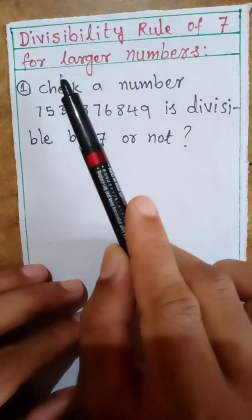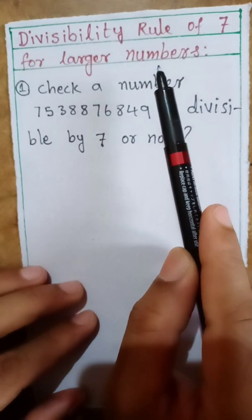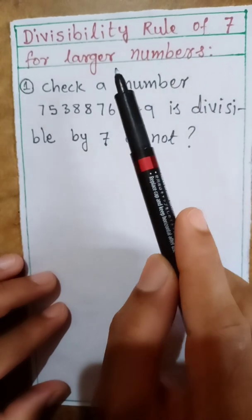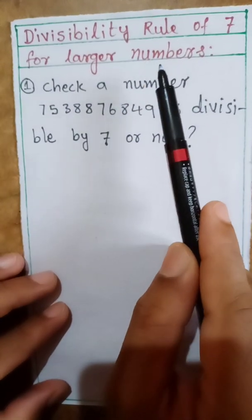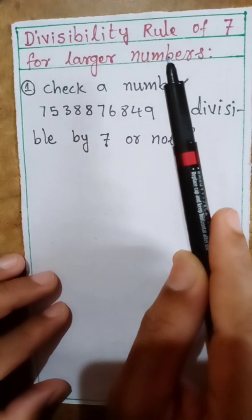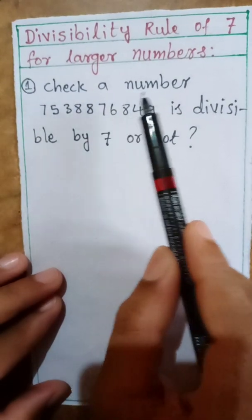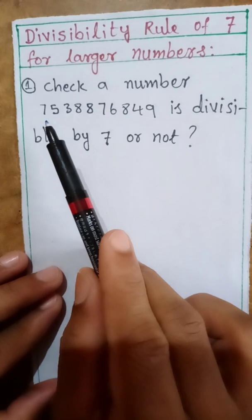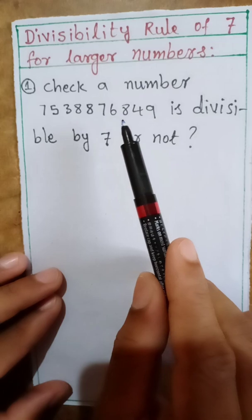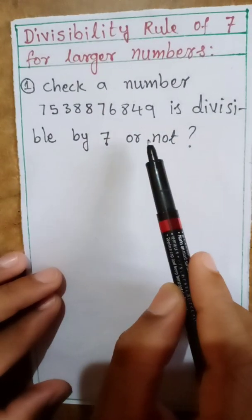Divisibility rule of 7 for larger numbers. Before we discussed 3-digit numbers and how to divide by 7. Now for more than 3 digits — 4 digits, 5 digits, 6 digits, whatever may be — we need to check differently. See here Example 1: check whether 753 crores 88,76,849 is divisible by 7 or not.